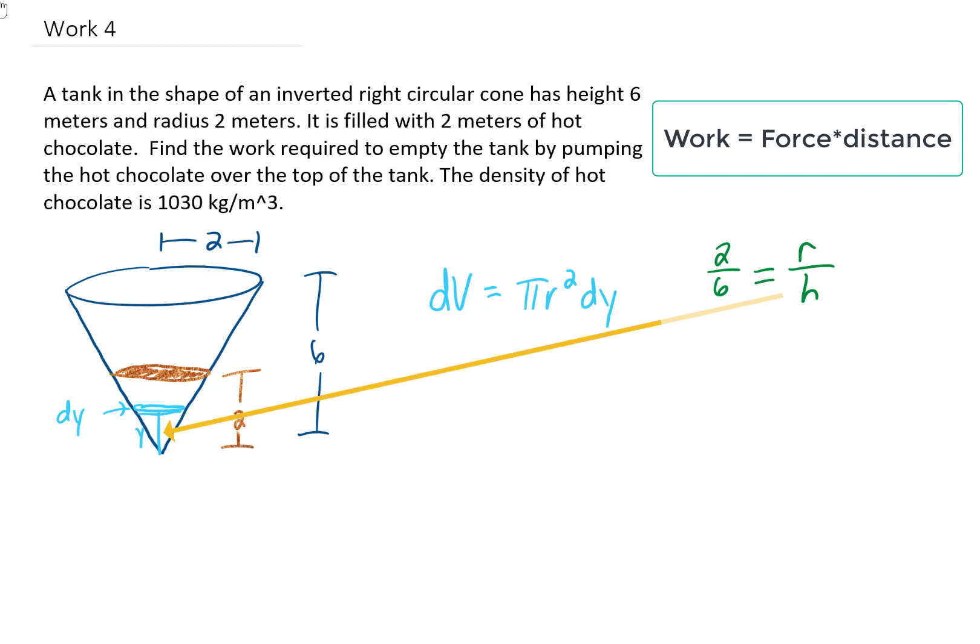Now, down here, we said that the height of this little cone of hot chocolate is going to be y, so we can replace h with y and multiply by y, and we get (1/3)y equals r.